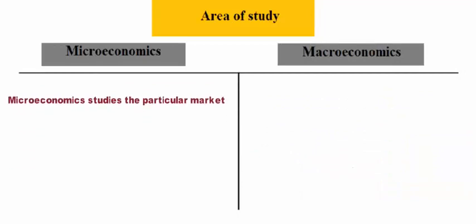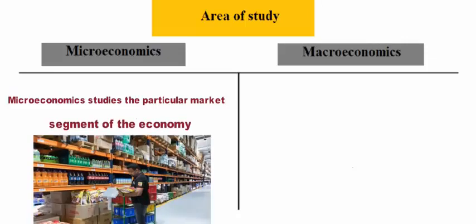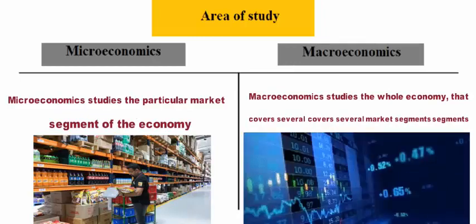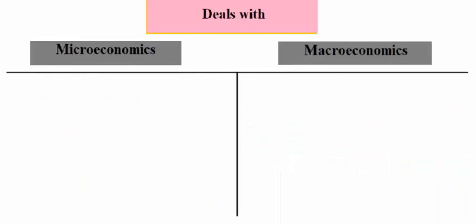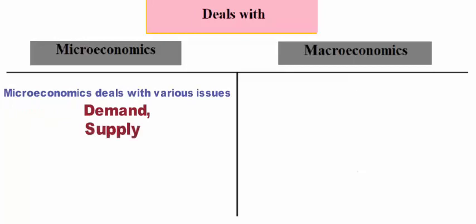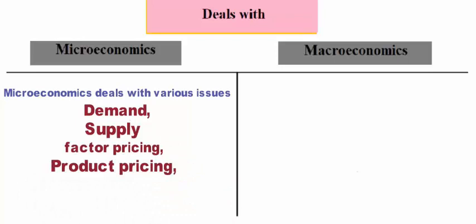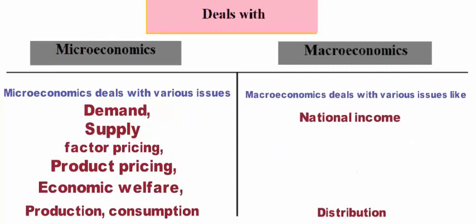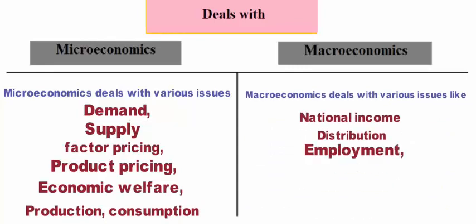Second: Area of study. Microeconomics studies the particular market segment of the economy. Macroeconomics studies the whole economy that covers several market segments. Third: Deals with. Microeconomics deals with various issues like demand, supply, factor pricing, product pricing, economic welfare, production, and consumption. Macroeconomics deals with various issues like national income, distribution, employment, general price level, and money.